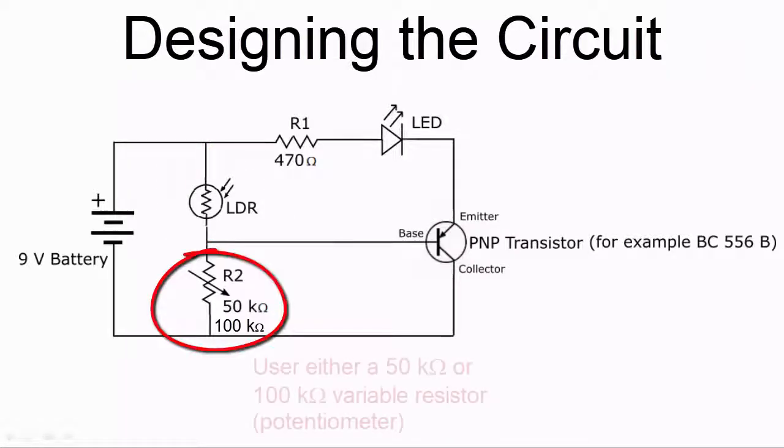The variable resistor works in conjunction with the LDR to control the level of light at which the transistor is switched on.